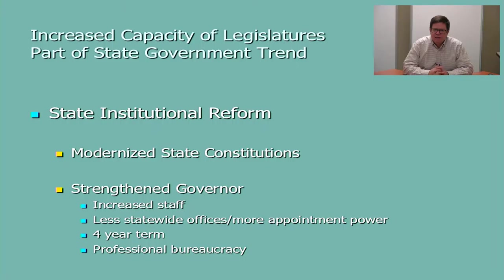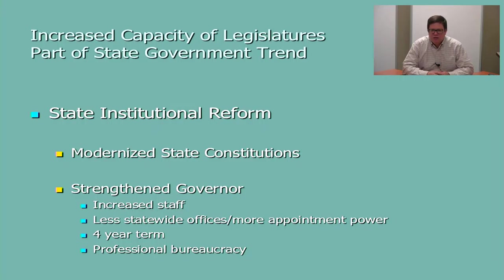As the capacity of legislatures increased, so did the capacity of governors. A couple of things went along with strengthening the executive branch, particularly the governor. One was an increase in the amount of staff for governors around the country. The second was an effort to streamline the number of statewide elected officials. Some states still elect up to ten different people — insurance commissioners, agricultural commissioners, and so forth — but most states have streamlined that process. The goal is to allow a governor, when elected, to appoint people to various state agencies who are in tune with the goals they want to accomplish.